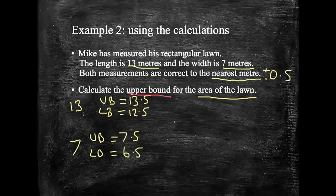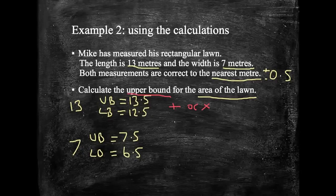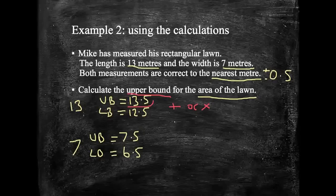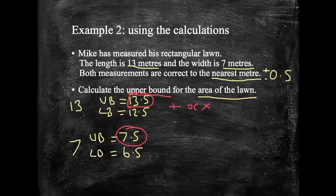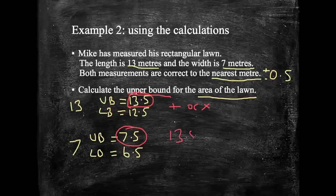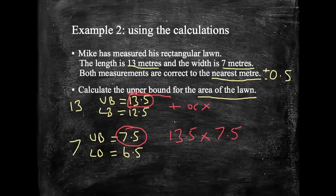Now, with these figures, with add and multiply in particular, so when I'm adding or I'm multiplying, we can see that we need the largest figures. I need the biggest figure for this, for the length, and I need the biggest one for the width. So in this case, the biggest area would have been 13.5 multiplied by 7.5.